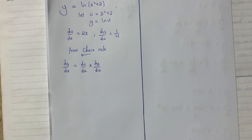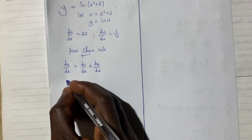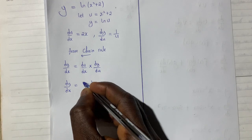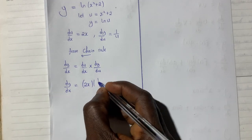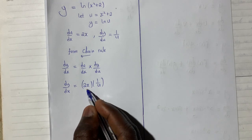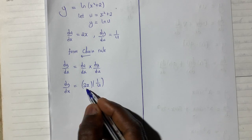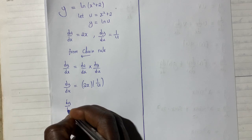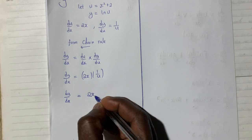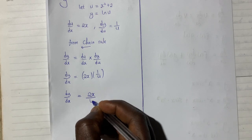When we put in the result we got into the formula, we have dy dx giving us 2x times 1 over u. This will multiply this over 1. I have dy dx producing 2x over u.